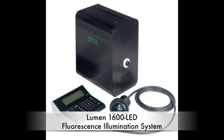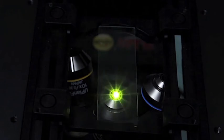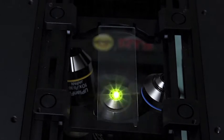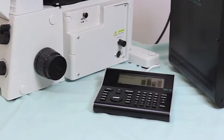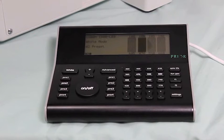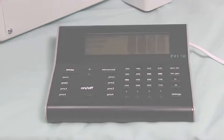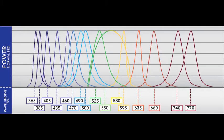The Lumen 1600 LED fluorescence illumination system sets the standard for fluorescence microscopy LED light sources, with four four-channel wavelength groups that match all commercially available dual, triple, and quad filters. With its unique 16 selectable LED wavelengths, the Lumen 1600 provides the broadest LED spectrum available, from 365 to 770 nanometers.